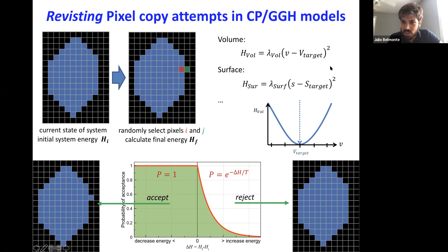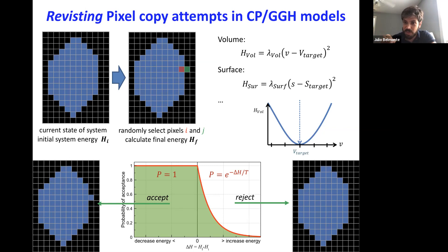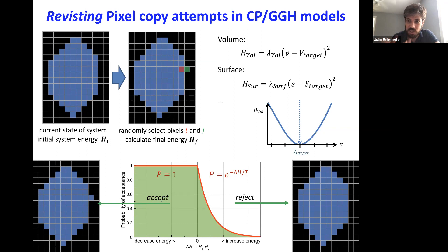Any questions about how the pixel copies or cells evolve their shapes in CompCell? There was a question: what happens if there are higher-order terms in the Hamiltonian, like to the power of 4? Well, you are changing the shape of the curve — a fourth-order term will be a little flatter at the bottom but go up higher later. There is a way to change those things in CompCell, but you have to develop a new plugin — maybe by the end of the workshop we'll tell you how to change those terms.